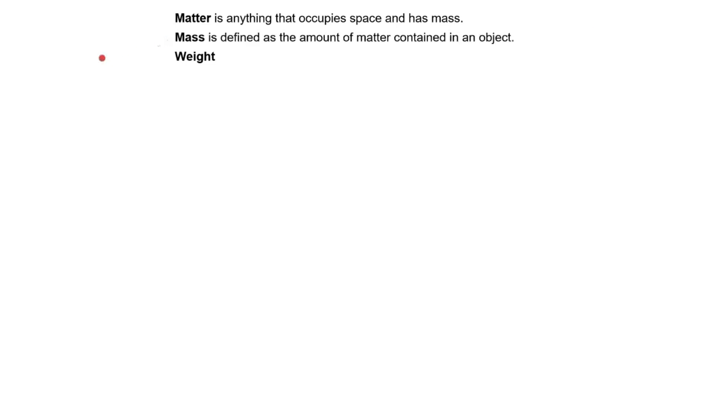Mass is defined as the amount of matter contained in an object. Mass is a way to measure the amount of matter. Now weight is a measure of how a force acts upon mass. This is most commonly measured in newtons or pounds.